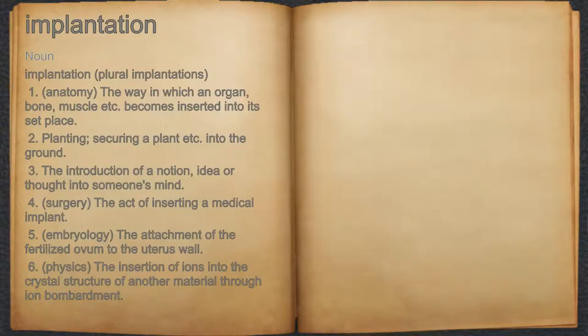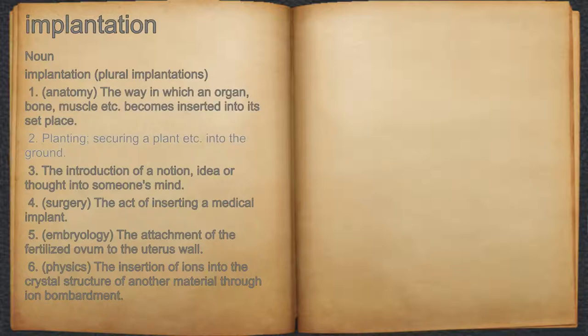Implantation. Noun. 1. Anatomy: the way in which an organ, bone, muscle etc. becomes inserted into its set place. 2. Planting: securing the plant etc. into the ground.